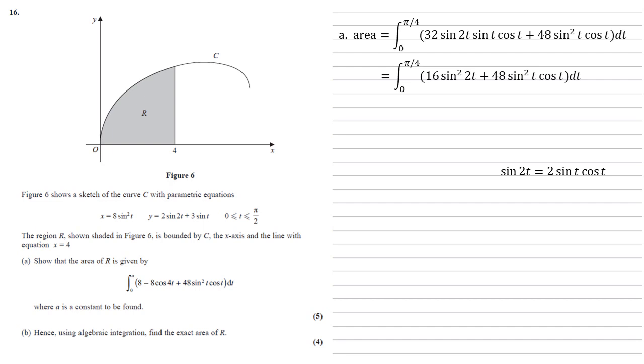Now we need cos 4t. The double angle formula for cos 4t can be written as 1 minus 2 sine squared 2t. Rearranging, 2 sine squared 2t equals 1 minus cos 4t. But we have 16 sine squared 2t, so multiplying by 8 gives 16 sine squared 2t equals 8 minus 8 cos 4t.